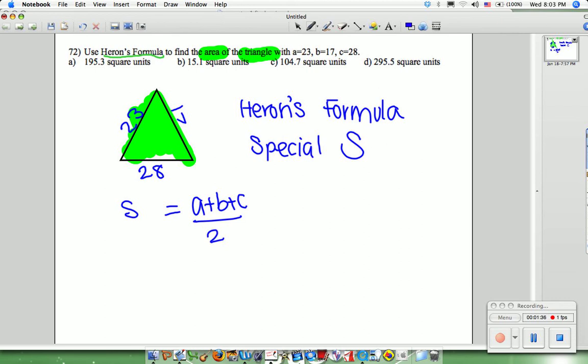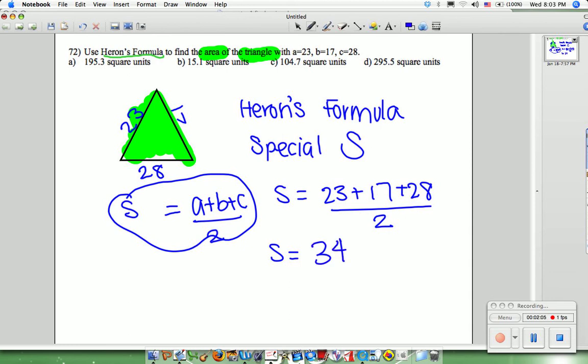When we find S, we use the formula. S is equal to 23 plus 17 plus 28 over 2. So what is S, Mama? It's a special number that you use to find the area of a triangle given all sides. S is 34. Take it from the mathematician.